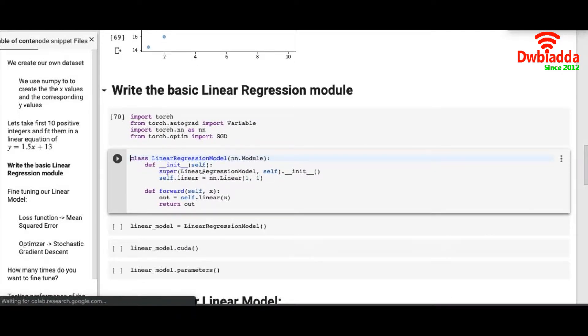First we will create a linear regression model class. I have named it as linear regression model but you can name it the way you want. Just remember you have to call nn.module inside the class. First you have to call an init function under which you have to define a super that will call itself.